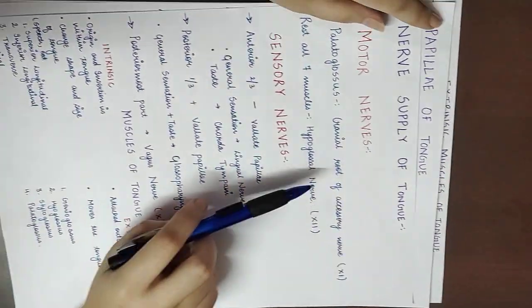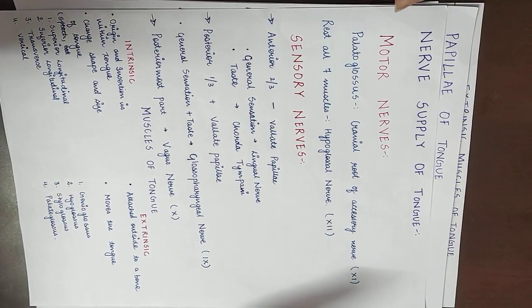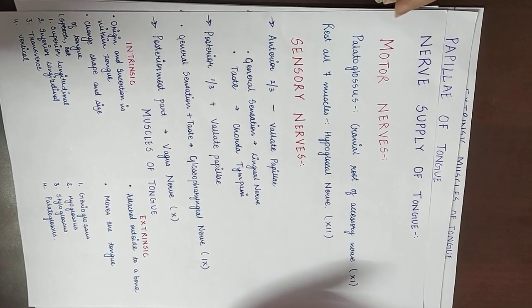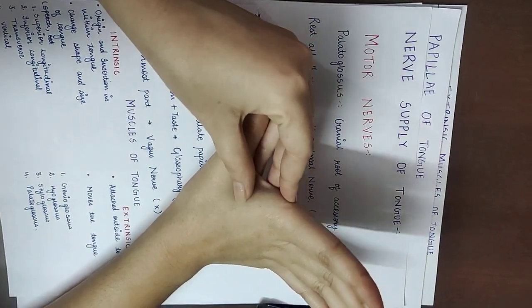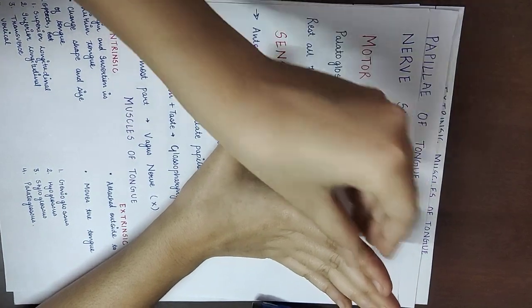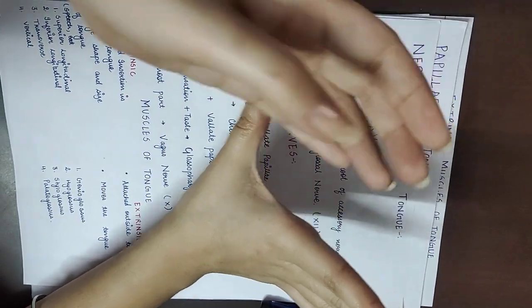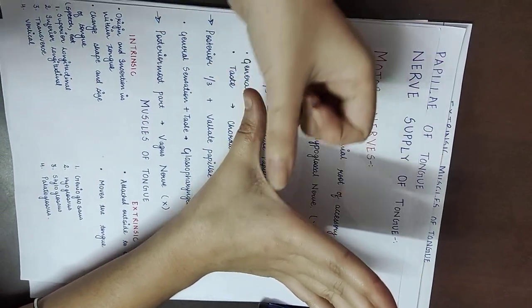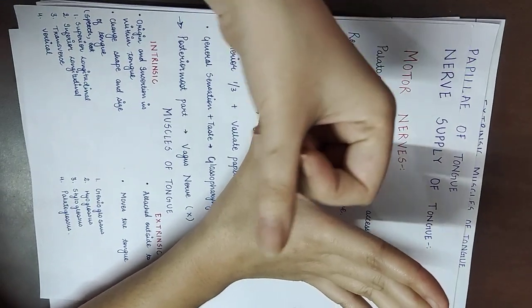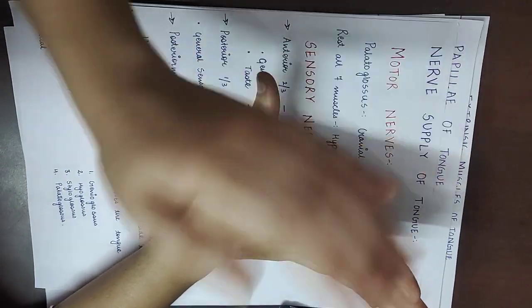The posterior-most part of the tongue is supplied by the vagus nerve, which is the 10th cranial nerve. One more important point: if the hypoglossal nerve is damaged — for example, if the right hypoglossal nerve is damaged — then the right side is paralyzed. When the tongue is protruded, the base will deviate toward the unaffected side and the tip will deviate toward the affected side, because the opposite functioning muscles contract and push the tongue toward the paralyzed side.